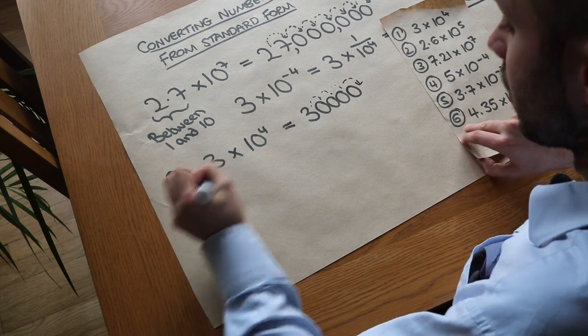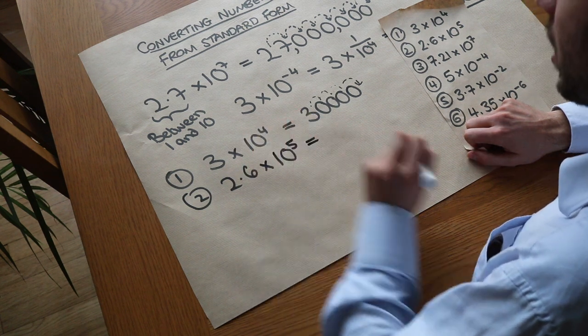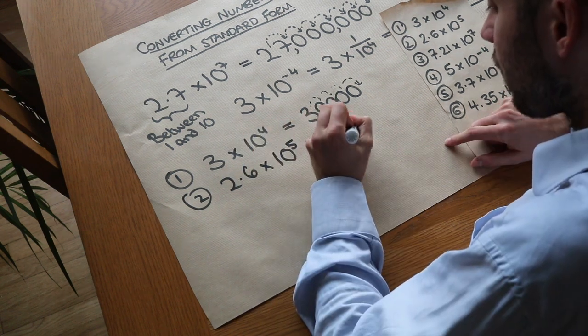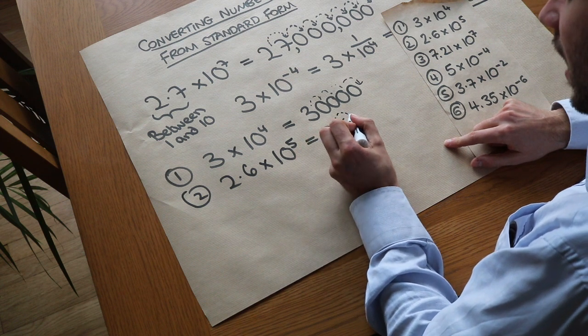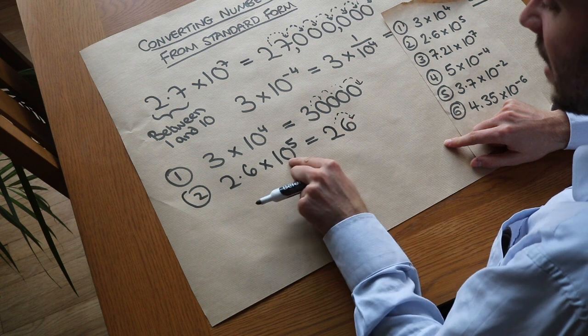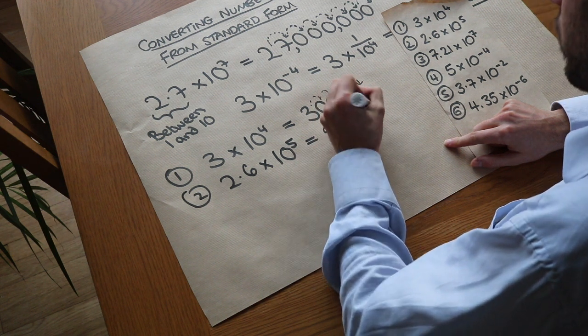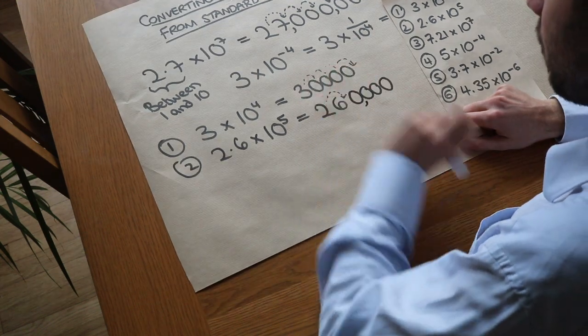What about the second one? 2.6 times 10 to the 5. That's in standard form, we want to convert it to a normal number. Well if the decimal point is originally here, we move it once to get it to the end of the number so we get to 26, but we still need to multiply by 10 four more times. We're going to get four zeros, and that's 260,000.